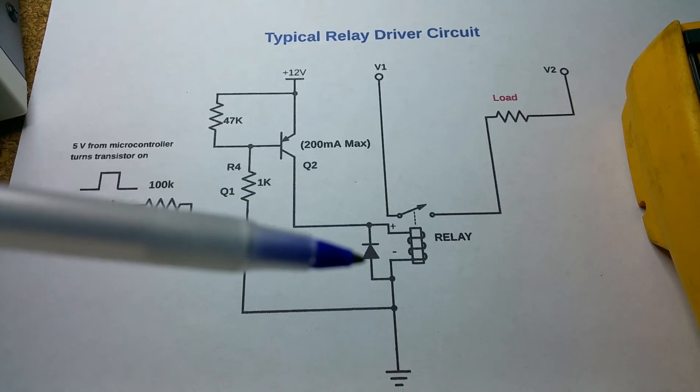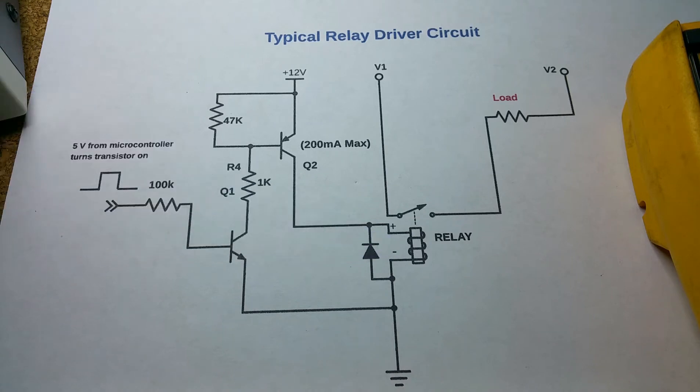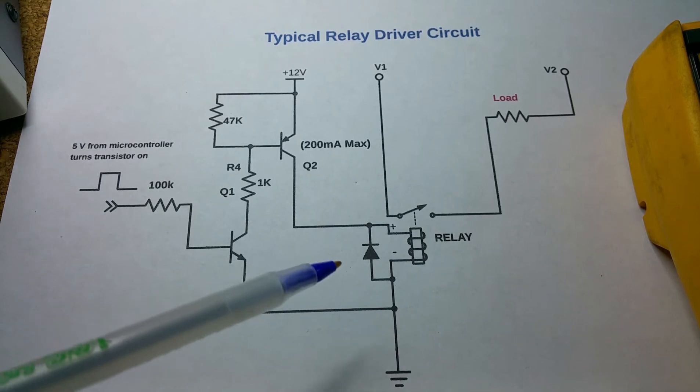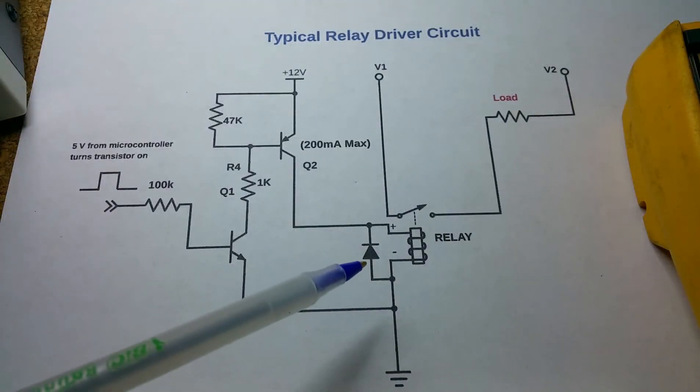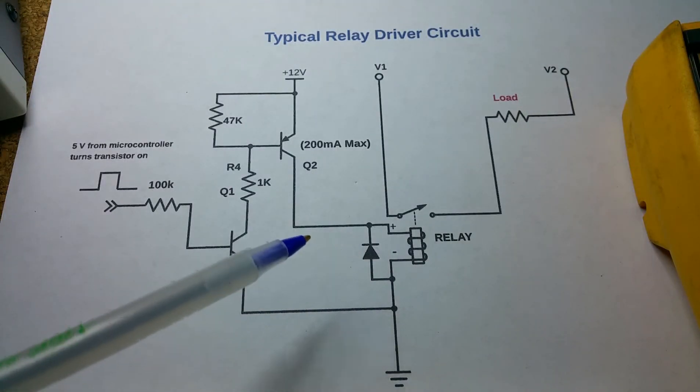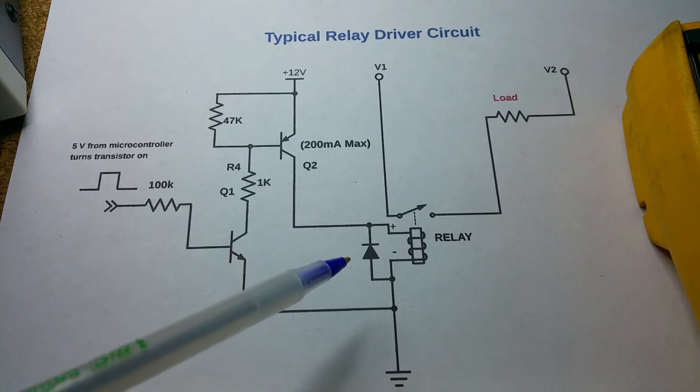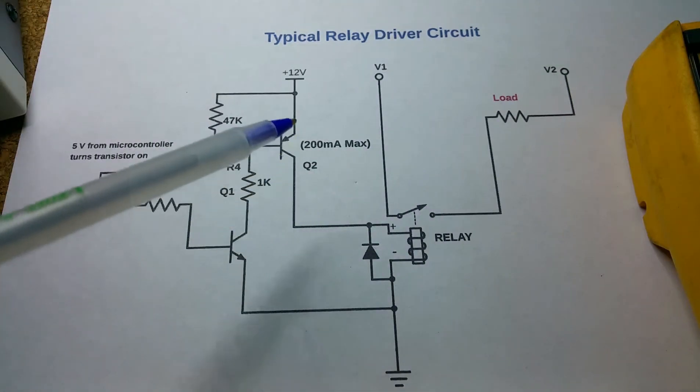Another thing that could happen is this diode could short out. That diode withstands a lot of abuse from that relay and I have seen them short out, although not that often. If it does short out, basically that relay is not gonna get any voltage because it's gonna act like a wire, and this transistor is going to be supplying tons of current down through what is essentially a wire now.